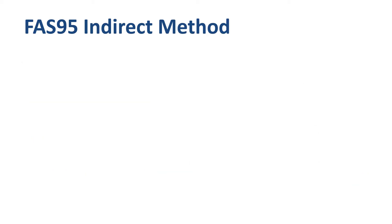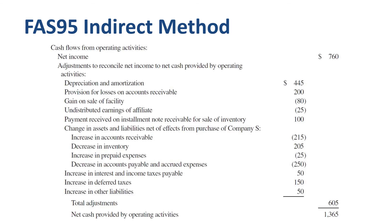Here's the example from FAS95 on reporting CFOA using the indirect method. When you use the indirect method, you start off with net income, or net profit. In this example, net income is 760 million.